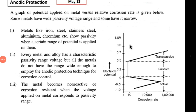Good afternoon students. Let us continue with the topic of protection of metals. In the last lecture we saw what is cathodic protection, and now let us continue with the topic of anodic protection. Anodic protection is very similar to cathodic protection, but here the metal is forced to behave as an anode instead of a cathode.